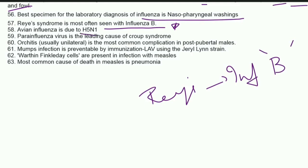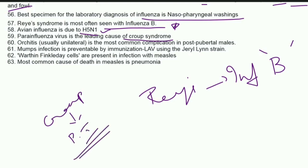Avian influenza is due to H5N1. Parainfluenza virus is the leading cause of croup syndrome. Orchitis, usually unilateral, is the most common complication in post-pubertal males with mumps. Mumps infection is preventable by immunization using the Jeryl Lynn strain. The Danish 1331 strain is for BCG. Warthin-Finkeldey giant cells are present in measles infection, and the Edmonston-Zagreb test is also for measles. The most common cause of death in measles is pneumonia.